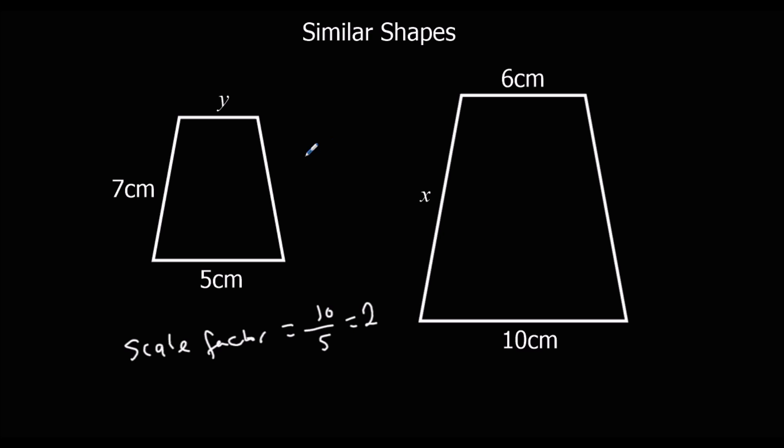So to go from the little shape to the big shape, I times by 2, because that's the scale factor. And to go from the big shape back to the little shape, I do the opposite. The opposite of timesing by 2 is dividing by 2.